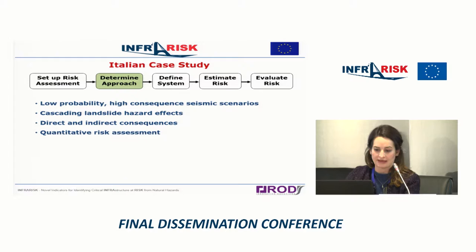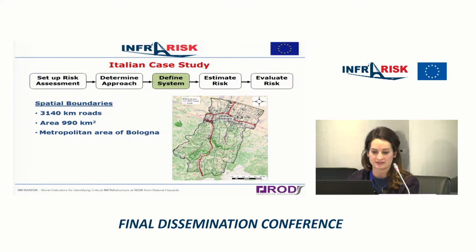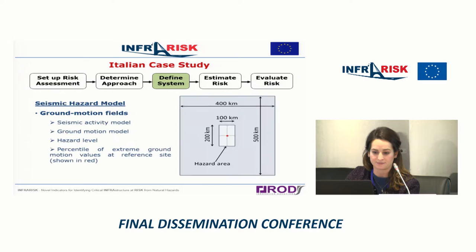For the Italian case study we performed a quantitative risk assessment to consider the uncertainties and to determine the distribution of losses for various scenarios. The case study region consists of an area of almost 1,000 kilometres squared and over 3,000 kilometres of roadway. Shown in red is the main motorway along the TEN-T network. Bologna is one of the most important business centres in Italy, which was one of the reasons for looking at it.